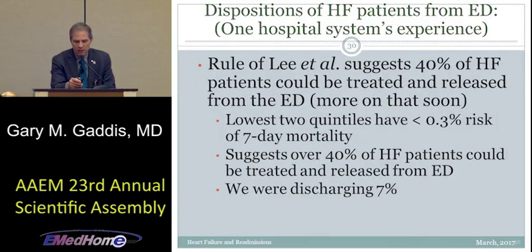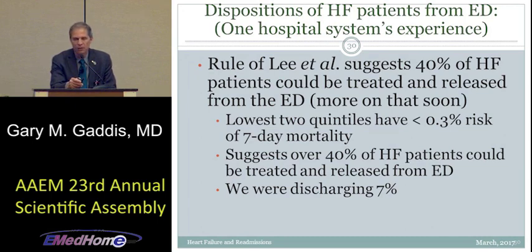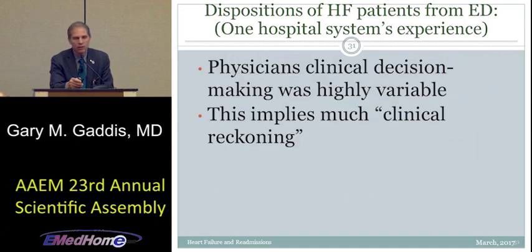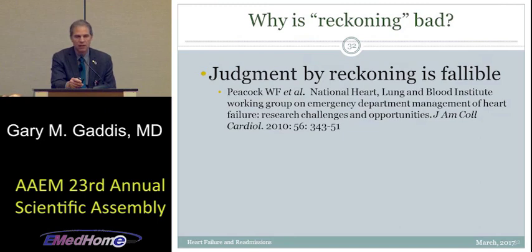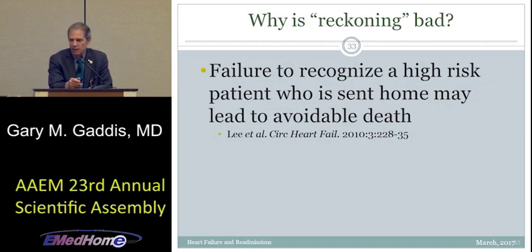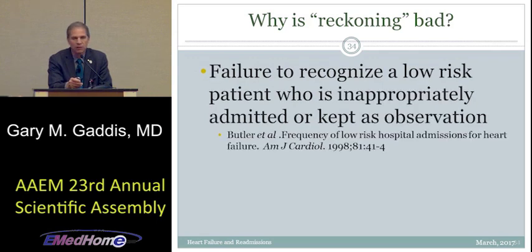This contrasts with data showing 40% of these patients can safely be sent home. The Lee et al. rule shows the lowest two quintiles of risk scores have a 0.3% risk of 7-day mortality. To move from 7% discharge rates toward 40%, we need to overcome physician decision-making variability. Clinical reckoning is fallible in both directions: we can miss a sick patient who ought to be admitted, or we can unnecessarily admit someone who doesn't need it, running up the heart failure admission rate.